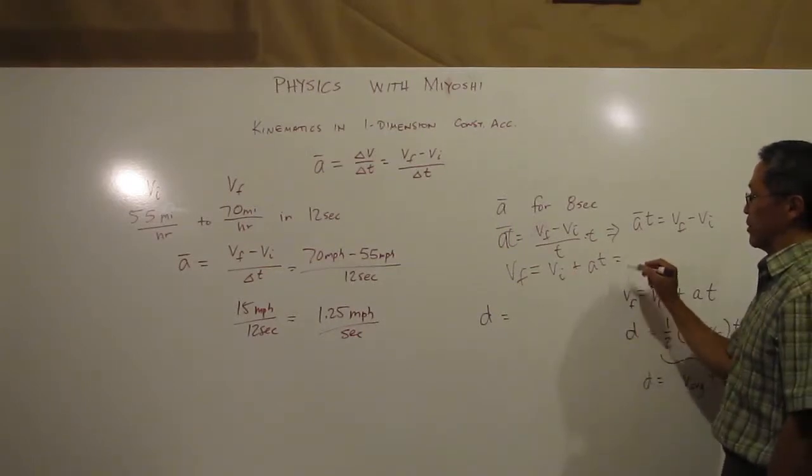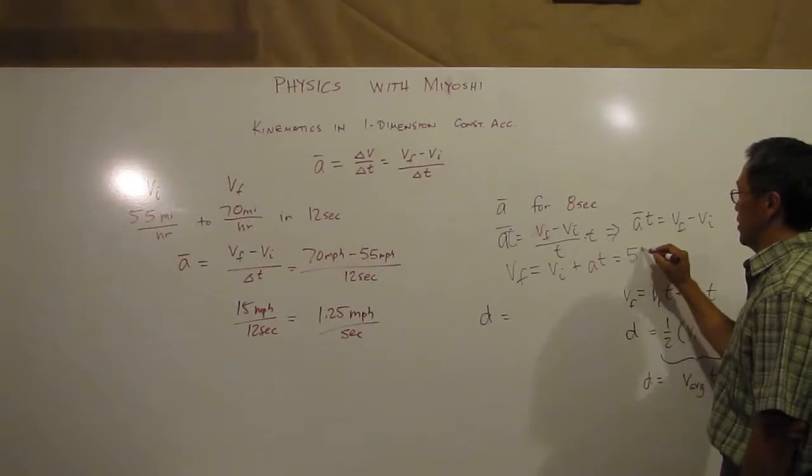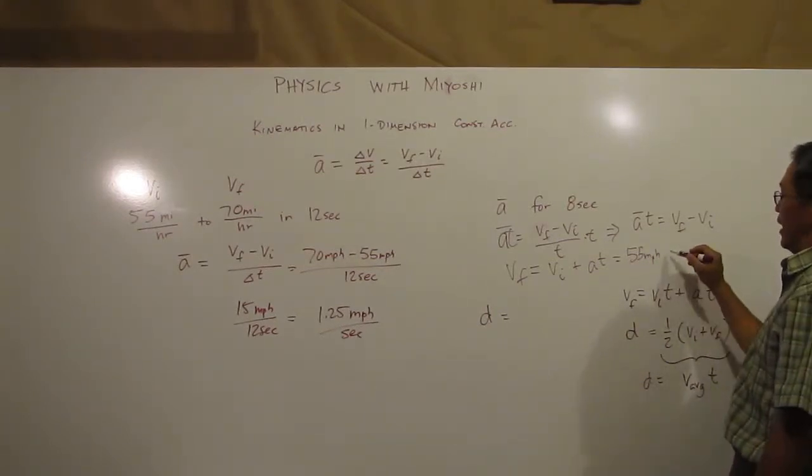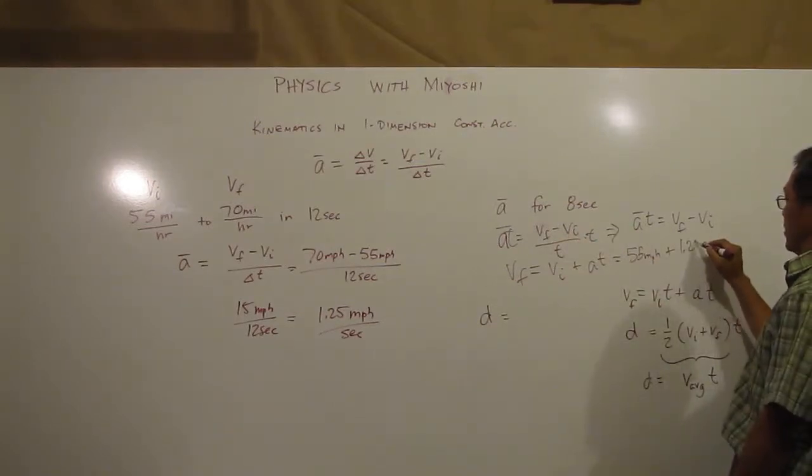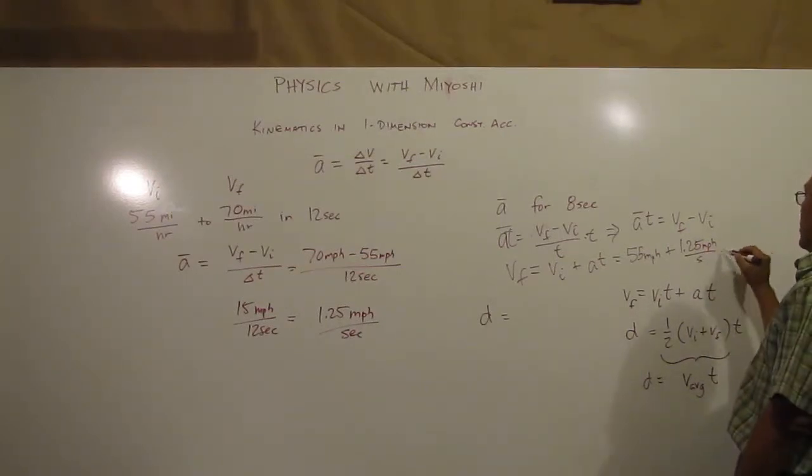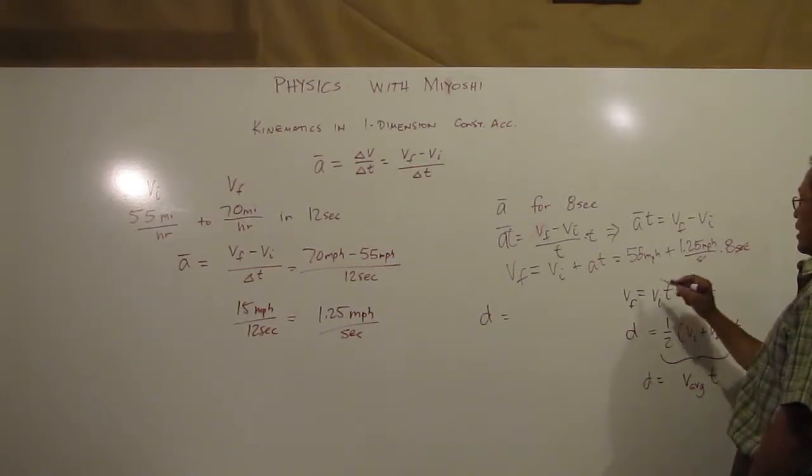Now if I plug in those numbers there, the initial is 55 miles per hour. And then I add in my acceleration, which is 1.25 miles per hour per second, and I multiply that by 8 seconds.